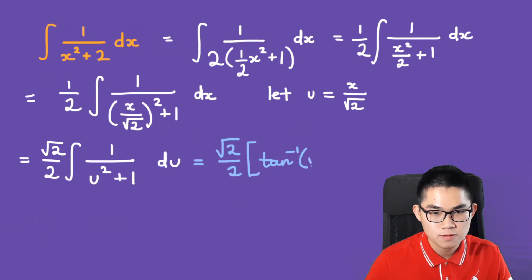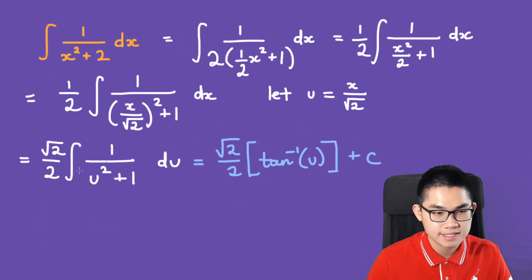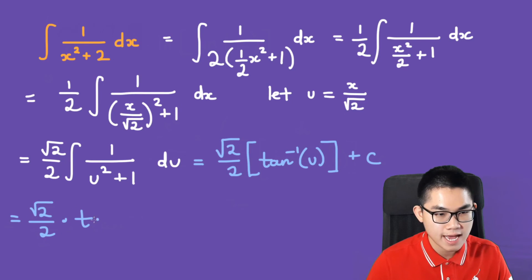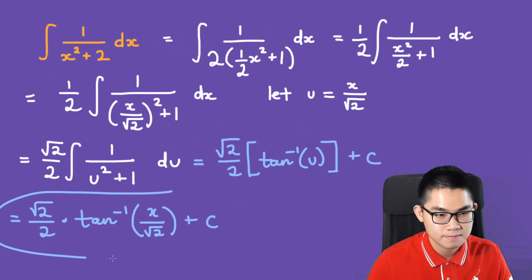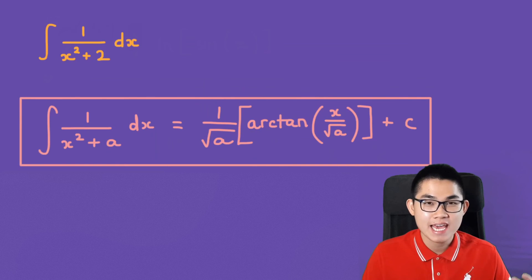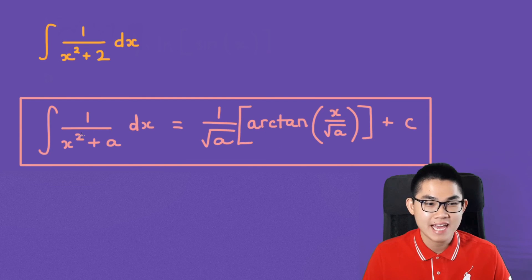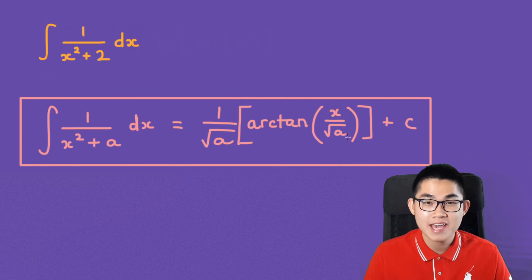We substitute u back in terms of x, giving the square root of 2 over 2 times arctan(x over the square root of 2) plus C. In general, whenever you have an integral in the form of 1 over x squared plus a, the answer is 1 over the square root of a times arctan(x over the square root of a) plus C.